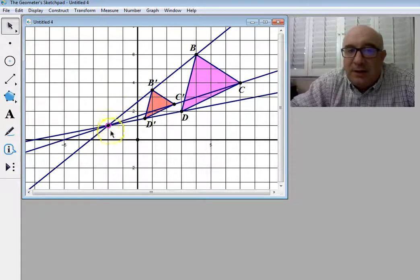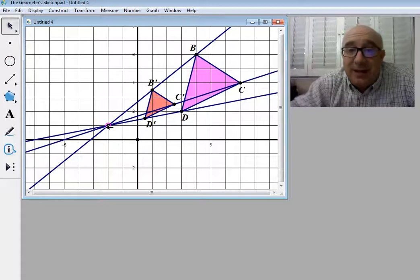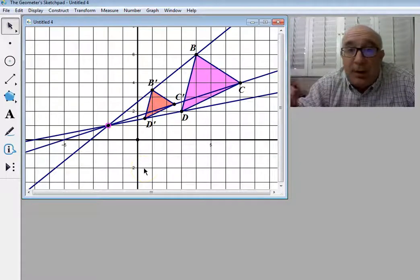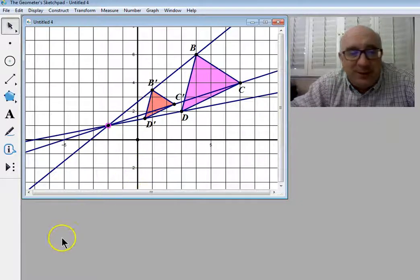So this is an example where the center of dilation is negative 2, 1, and it would have a scale factor of 1 half. These are the techniques to use slope as well as those rays to find the information. Thank you.